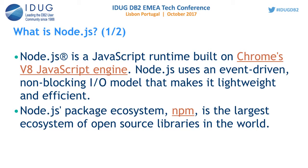First of all, what is Node.js? It is built on Chrome's JavaScript V8 engine and uses an event-driven, non-blocking I/O model that makes it lightweight and efficient. The Node.js ecosystem, called NPM, is the largest open source ecosystem in the world. IBM DB is also hosted on NPM, so we can install it directly using its package name.